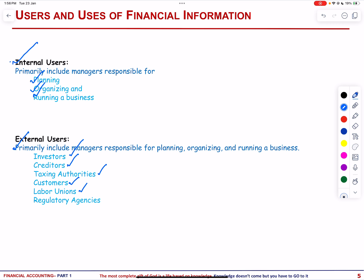Regulatory agencies ensure compliance with prescribed rules and regulations. The diverse information needs of these external users range from financial performance to ethical business practices. Regulatory agencies in particular play a crucial role in investigating companies to ensure adherence to rules, as exemplified by past cases involving energy trading companies. In essence, accounting serves as a universal language facilitating communication between the internal workings of a business and its various external stakeholders, contributing to informed decision making.